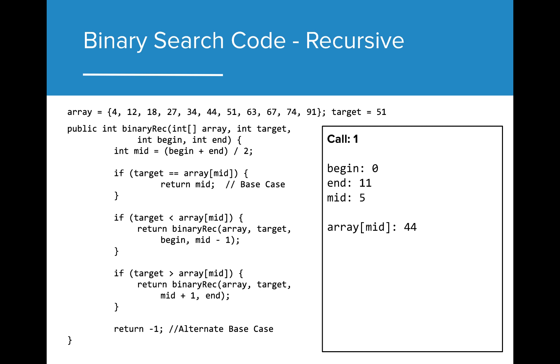Now let's look at another example using a recursive binary search. Remember, a recursive code calls a simpler problem each time through. In this case, each recursive call is essentially calling a smaller array until we get so small that we find our solution.